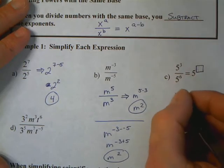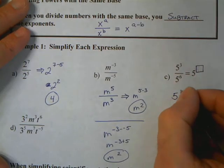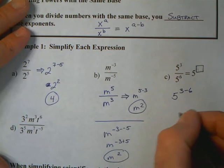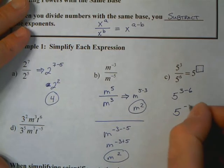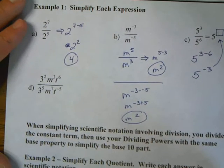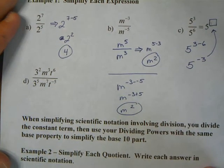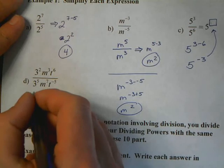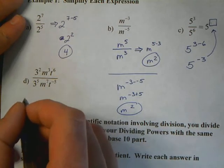Let's look at our third one. 5 to the third over 5 to the sixth equals 5 to the what? Let's think. What's 3 minus 6? 3 minus 6 is negative 3. So therefore, what goes in the box must be negative 3.